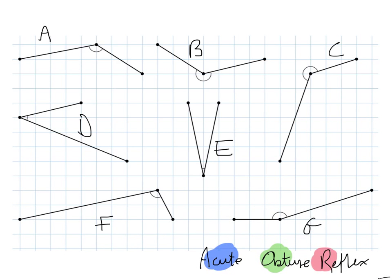Let's first of all identify the acute angles. D is obviously smaller than 90 degrees, as is E, which is the smallest angle on this sheet.